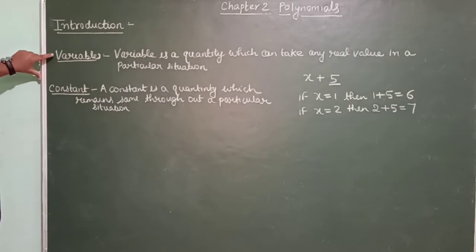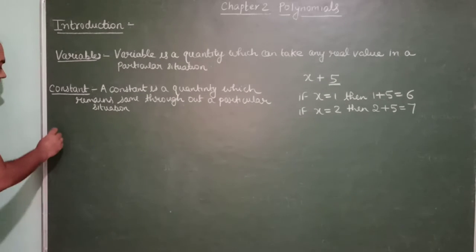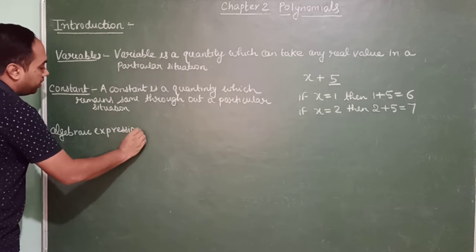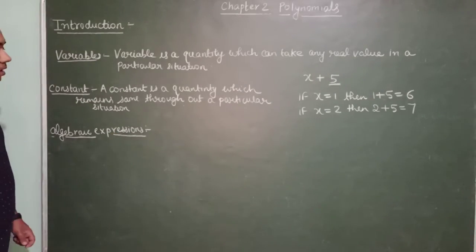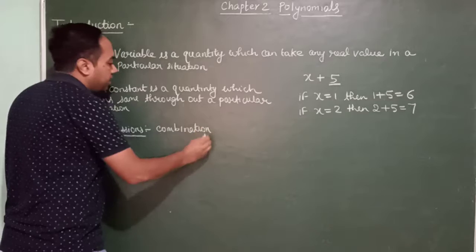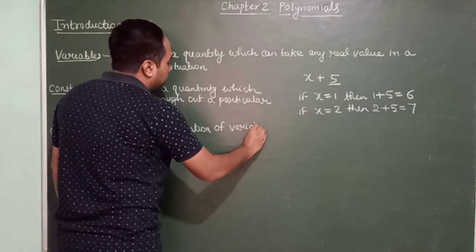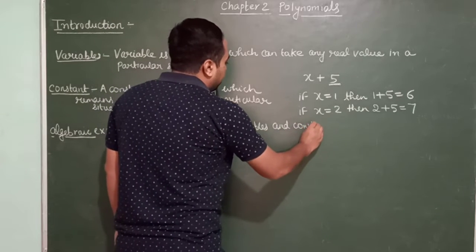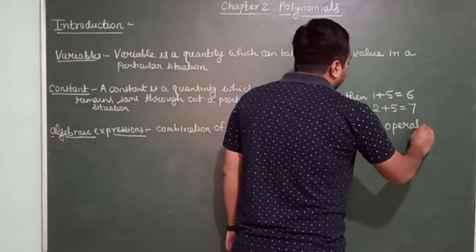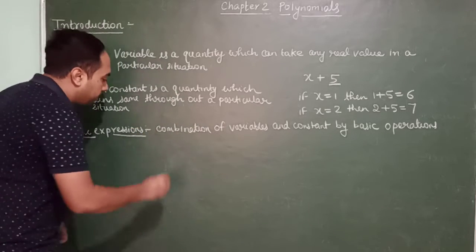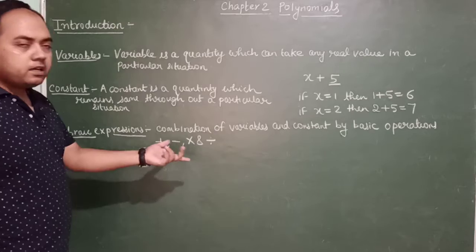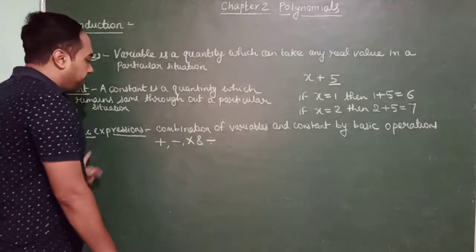We have studied the definitions of variable and constant. The next definition is algebraic expression. An algebraic expression is a combination of variables and constants joined by basic operations — that is, addition, subtraction, multiplication, and division.